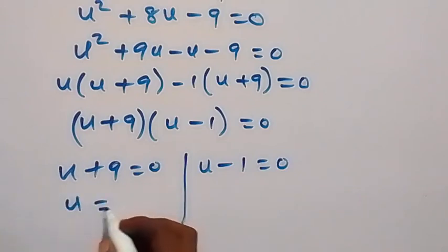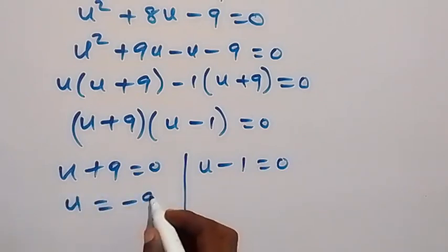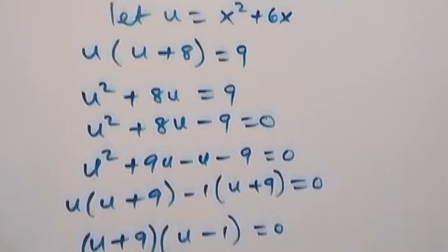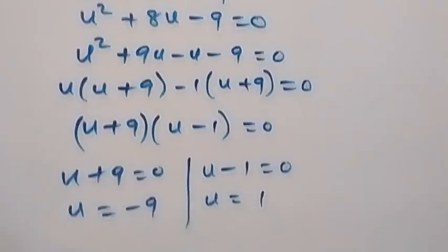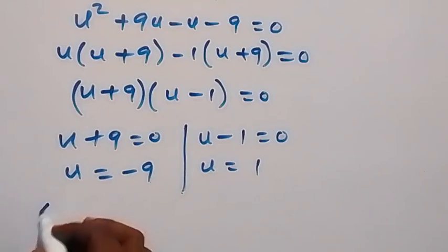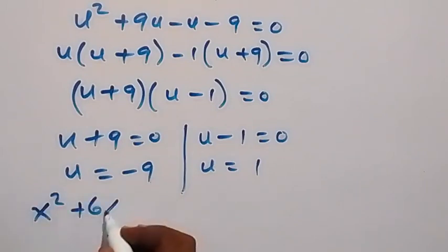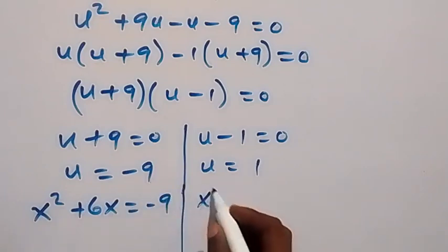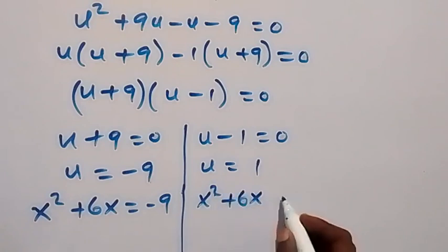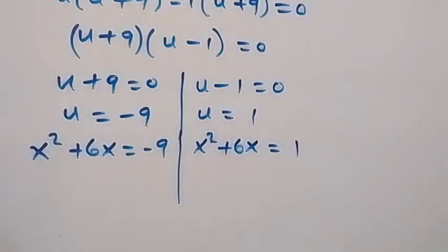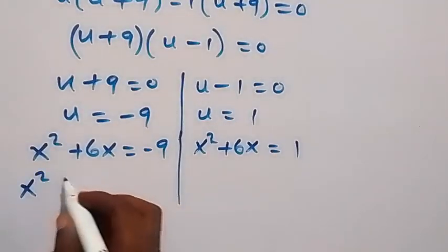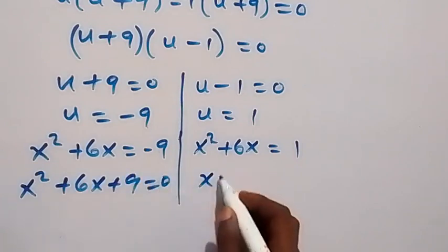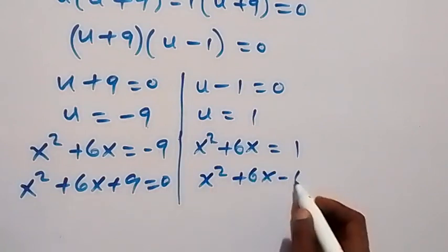So here u equals to minus 9, and u here equals to 1. And here we have x squared plus 6x equals to minus 9, and similarly here we have x squared plus 6x equals to 1. We can use this to form equations: we have x squared plus 6x plus 9 equals to 0. Also, we have x squared plus 6x minus 1 equals to 0.